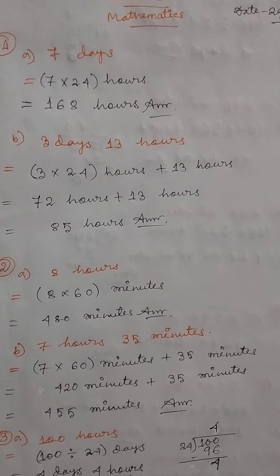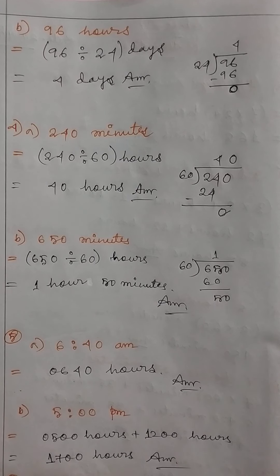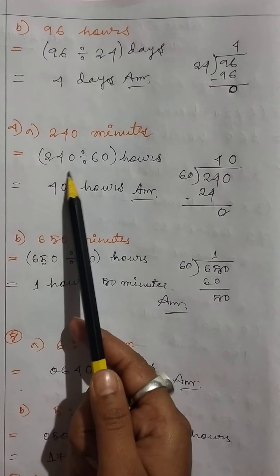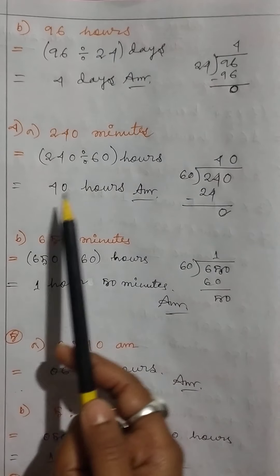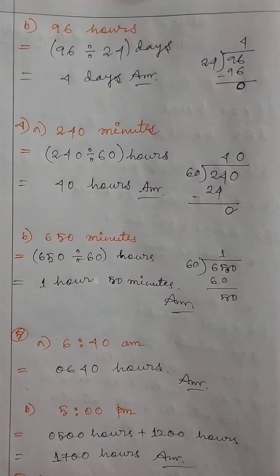Number 4: Convert the following into hours and minutes. 240 minutes: 240 divided by 60 equals 4 hours. Number 5: Convert to 24-hour clock. 6:40 am equals 06:40 hours. 5:00 pm equals 05:00 hours plus 12:00 hours